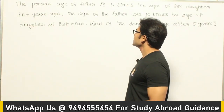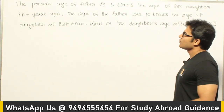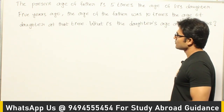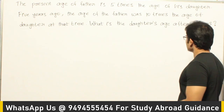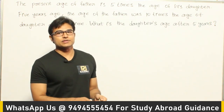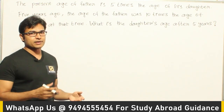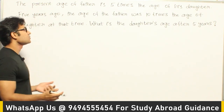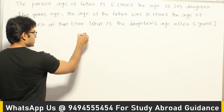Let's see this question: The present age of father is 5 times the age of his daughter. 5 years ago, the age of father was 10 times the age of daughter at that time. Then what is daughter's age after 5 years? They are talking about 2 ages - father's age and daughter's age - given through indirect equations. Let us assume that father's age is F and daughter's age is D.